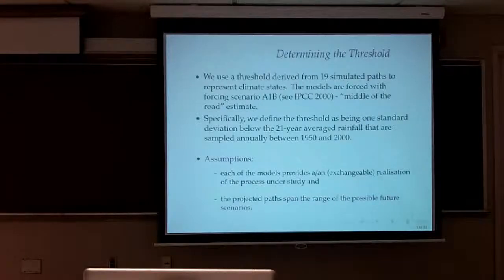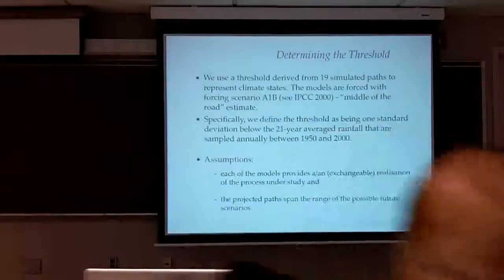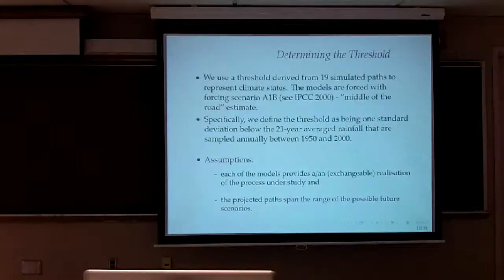Now, in order to determine the tipping point, you remember we were talking about, so what is the point of no return? In order to determine the point or the boundary that we want to cross with this experiment, just for the sake of didactic purposes, we picked the boundary to be defined as one standard deviation below the 20-year average rainfall that was sampled annually started in 1950 and 2000. So when the rainfall goes down too much, then we declare drought.